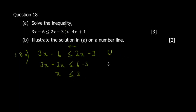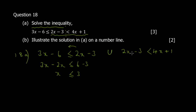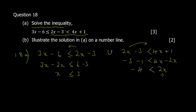Now take the second part of the combined inequality: 2x - 3 < 4x + 1. Move the smaller x term to the right and constants to the left to avoid negatives: -3 - 1 < 4x - 2x, giving -4 < 2x. Divide both sides by 2: x > -2.